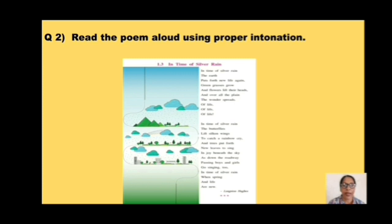In Time of Silver Rain by Langston Hughes. In Time of Silver Rain, the earth puts forth new life again. Green grasses grow and flowers lift their heads, and over all the plain the wonder spreads of life, of life, of life. In Time of Silver Rain, the butterflies lift silken wings to catch a rainbow cry, and trees put forth new leaves to sing in joy beneath the sky, as down the roadway passing boys and girls go singing too. In Time of Silver Rain, when spring and life are new.